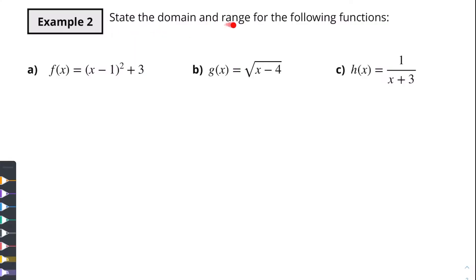So here we're being told to state the domain and range of these following functions. Looks like we've got a quadratic function here. I see that with our squared value. We've got a square root function and we've got this thing. Oh gosh that's called a rational function. But before we get to this let's get to our first one, our quadratic.